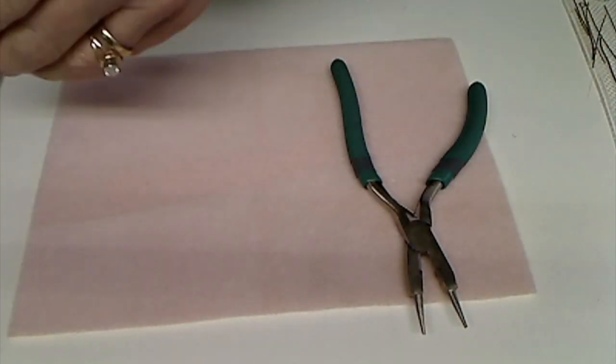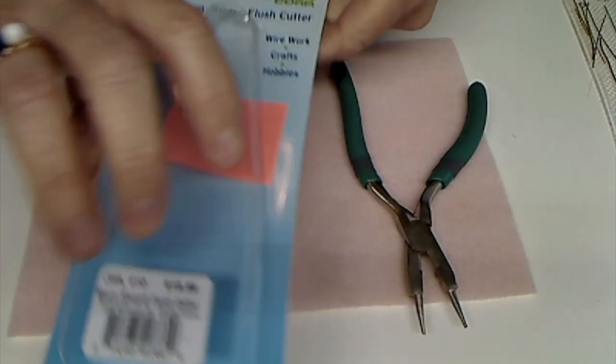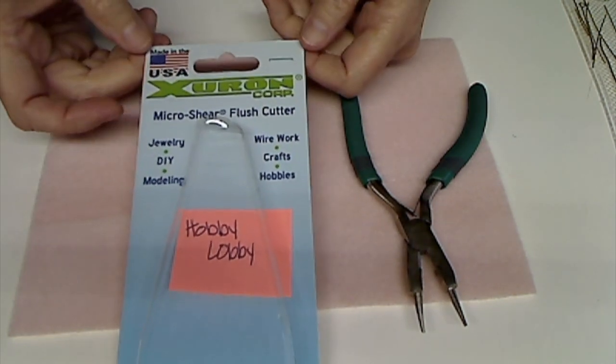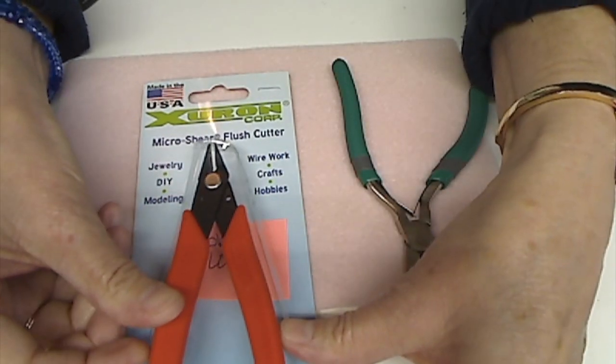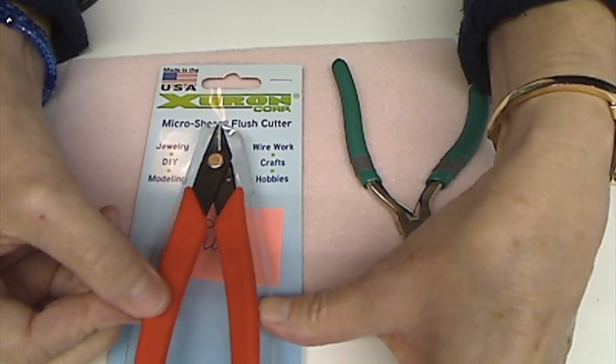Then the flush cutters. This is the package that they came in. Also from Hobby Lobby. And they're just in here like this. And this is an orange handle.